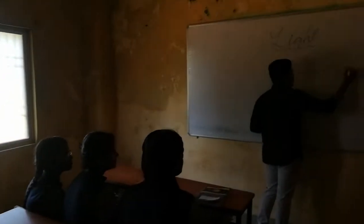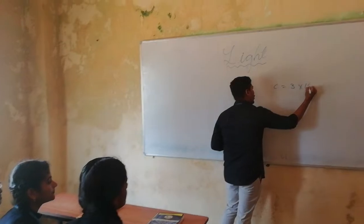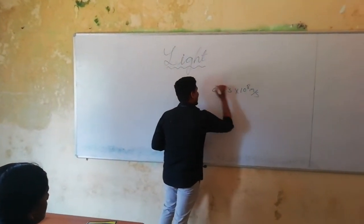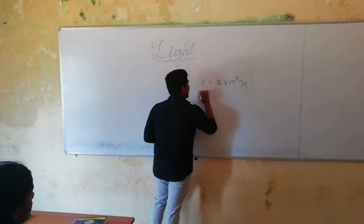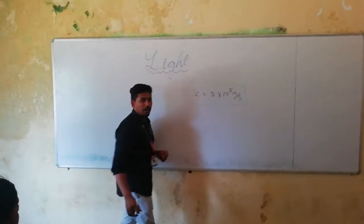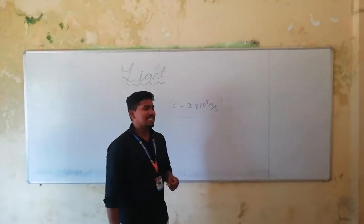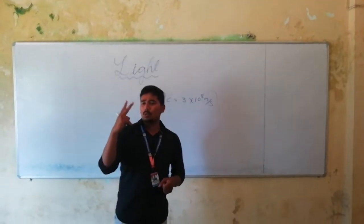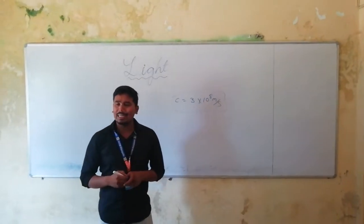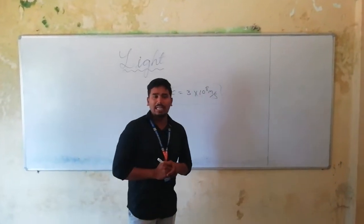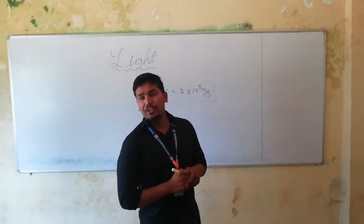What is the speed of light? The value is equal to 3 into 10 to the power of 8 meter per second. In this light topic, we will discuss about two things: one is reflection and another one is refraction.